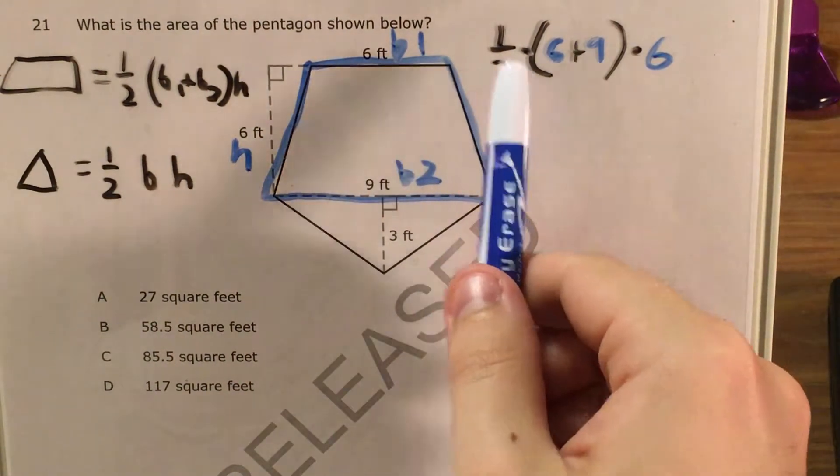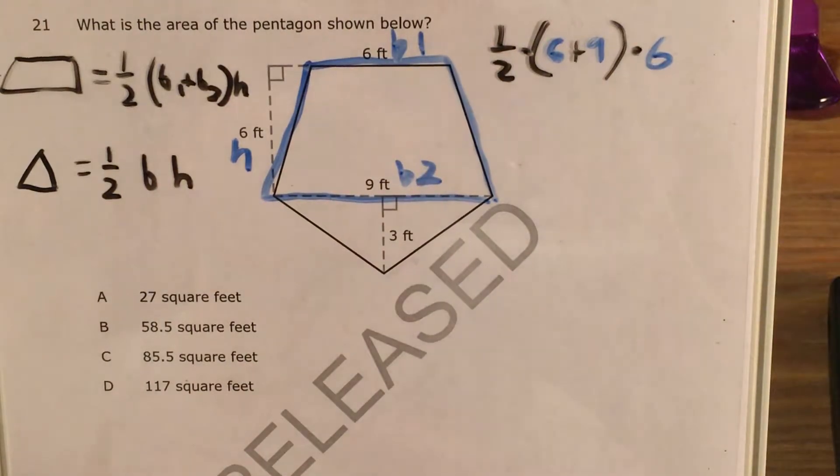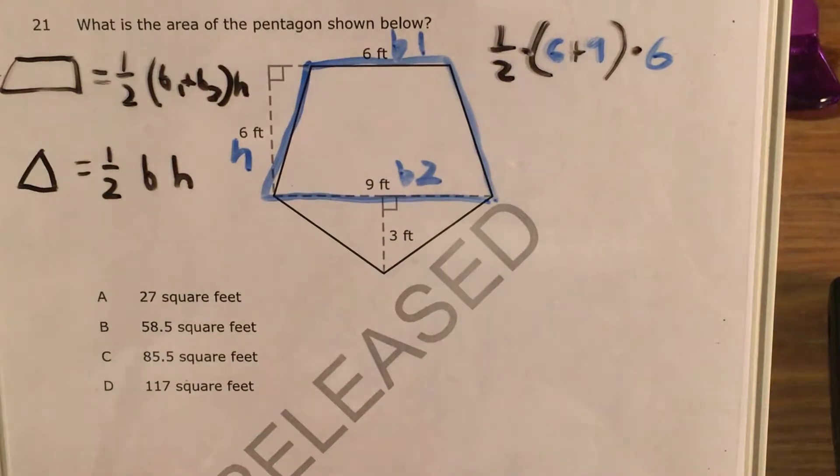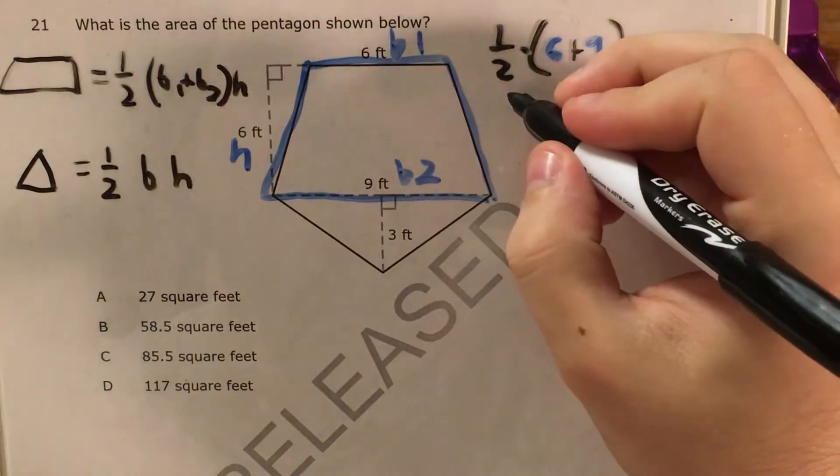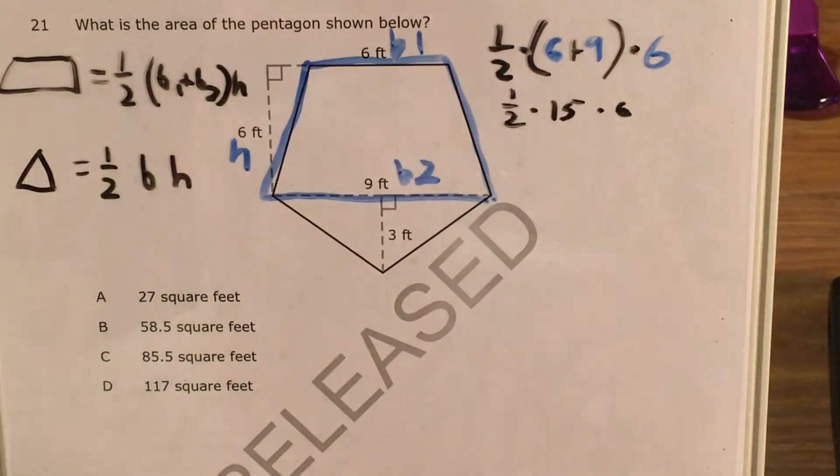Alright, so this is one-half times six plus nine times six. I can go ahead and use some order of operations to figure this out, starting with my parentheses, because P comes first in please excuse my dear Aunt Sally. So this becomes one-half times fifteen times six, and I can go ahead and plug that in my calculator.